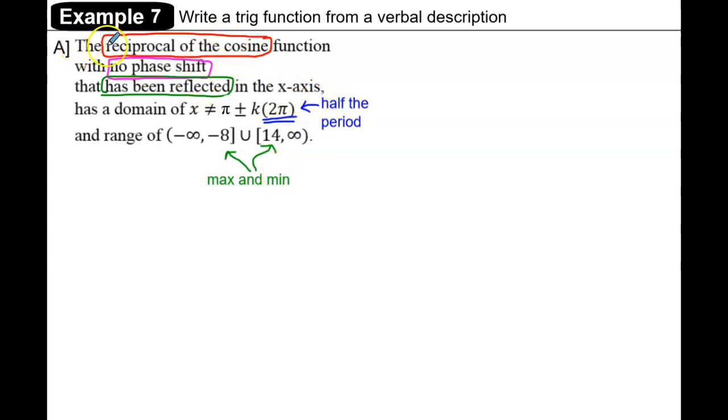The reciprocal of the cosine function tells me this is going to be a secant function, and no phase shift tells me that h = 0.